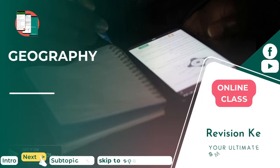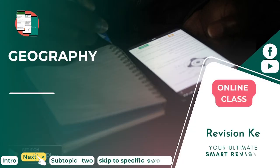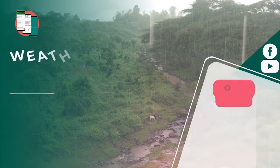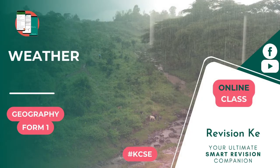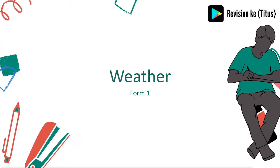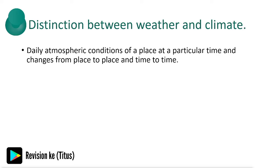In the last class we looked at the topic of the earth and the solar system. Today we are looking at the topic weather. This topic is important to note that it's somehow similar with a topic in Form 2 called climate, and so even as we get into the topic we need to be able to tell the two apart. Weather is the daily atmospheric conditions of a place at a particular time, and changes from place to place and time to time.